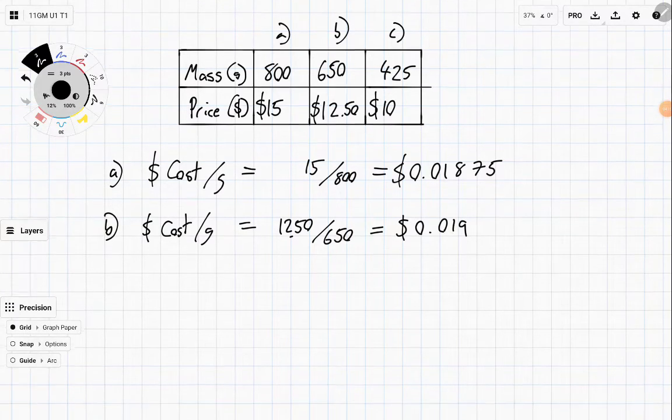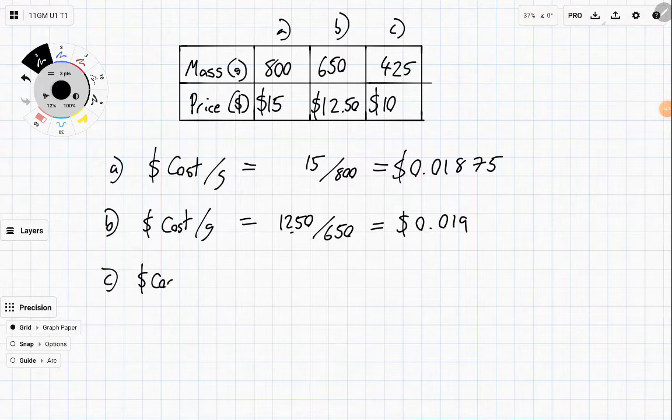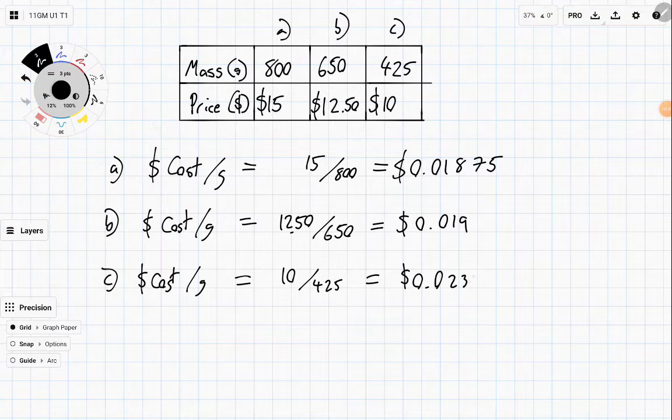Alrighty, lucky last C. Well, the dollar cost per gram is going to be 10 divided by 425. And for that, we're going to get 0.0235 or rounded to 23.